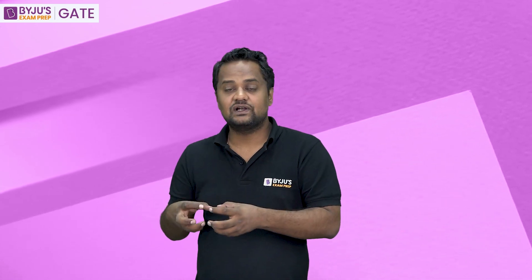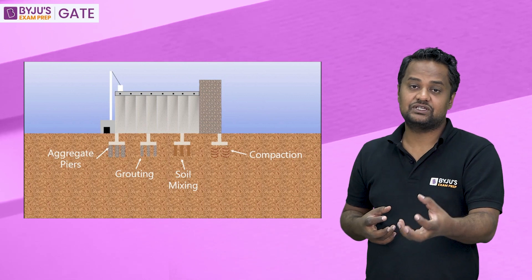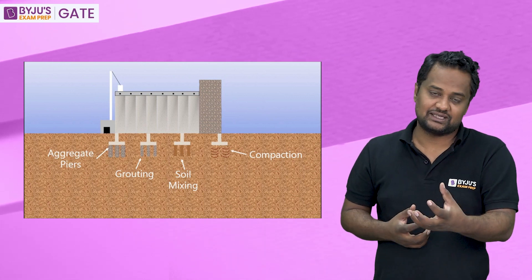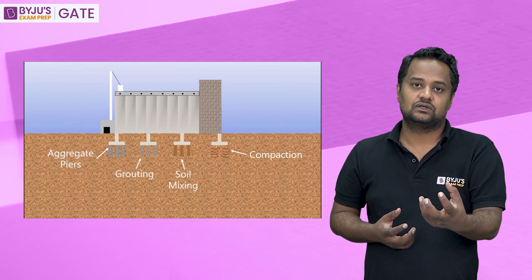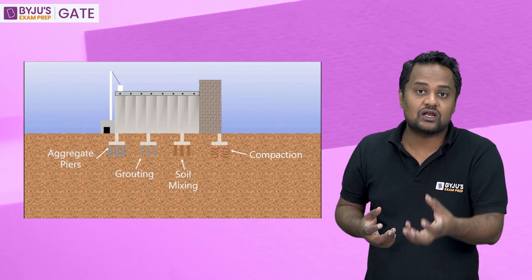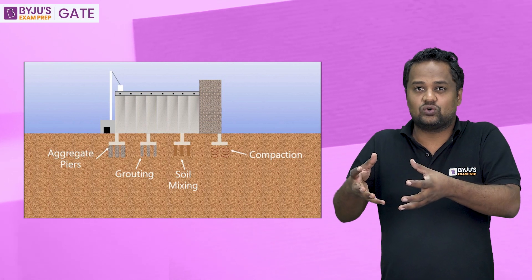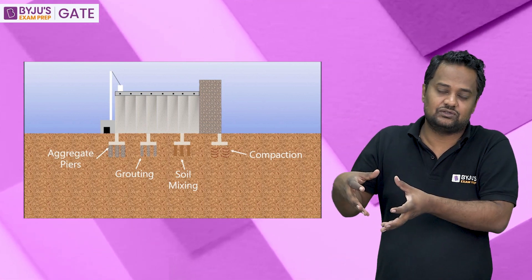If you ask about the preventive measures for quicksand condition and liquefaction, they may include: providing a drainage filter at the downstream end of a dam, soil stabilization methods, mixing of soils, making it well-graded soil, soil grouting, and proper drainage. If there is proper drainage for upward seepage, water can come out easily and will not create pressure, so the HLγw term will not arise and effective stress will not become zero.